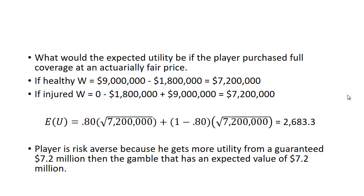Let's look at the expected utility if the player purchased full coverage at an actuarially fair price. If he's healthy, his wealth is 9 million minus the 1.8 million premium, which is 7.2 million dollars. If he's injured, his wealth is zero minus the 1.8 million premium plus the 9 million from the insurance company — also 7.2 million dollars. The expected utility, averaging across both states of the world, works out to 2,683.3 utils.